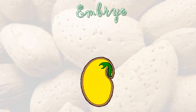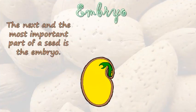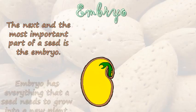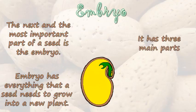Embryo. The next and most important part of a seed is the embryo. The embryo has everything that a seed needs to grow into a new plant. It has three main parts.